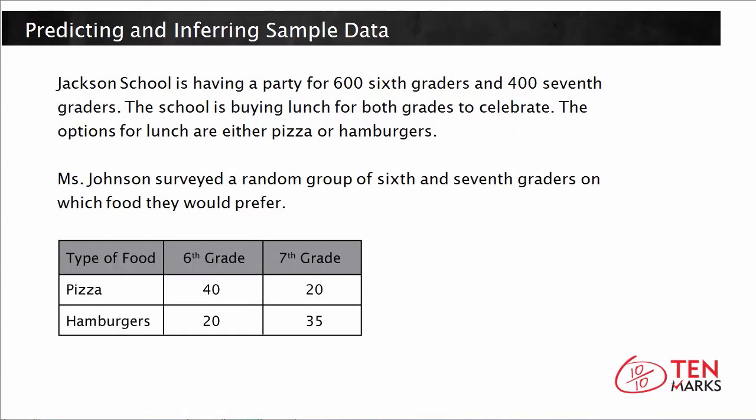Let's start with the problem. Jackson School is having a party for 600 sixth graders and 400 seventh graders. The school is buying lunch for both grades to celebrate. The options for lunch are either pizza or hamburgers.